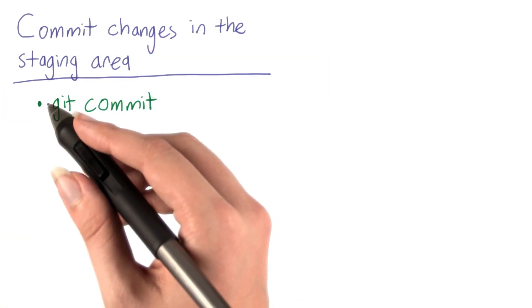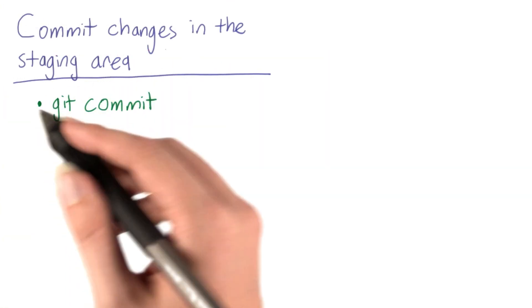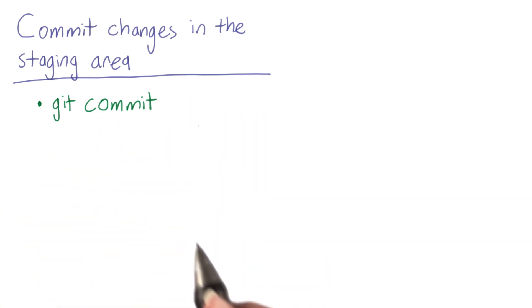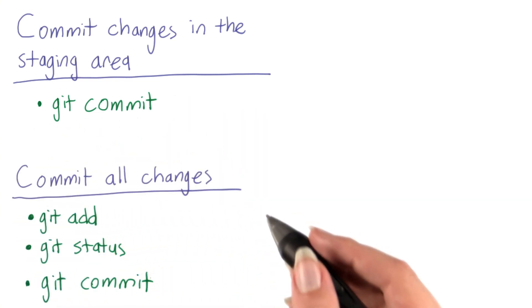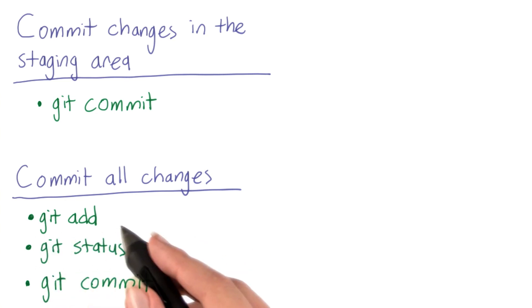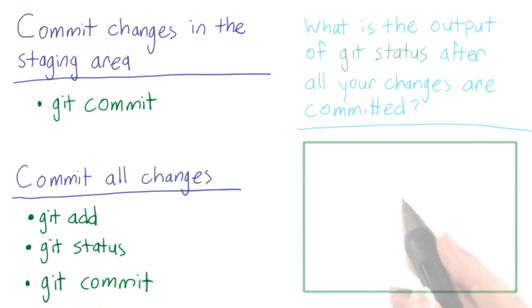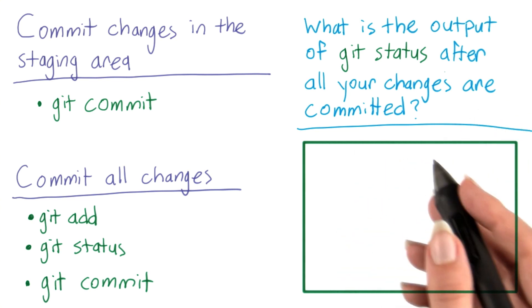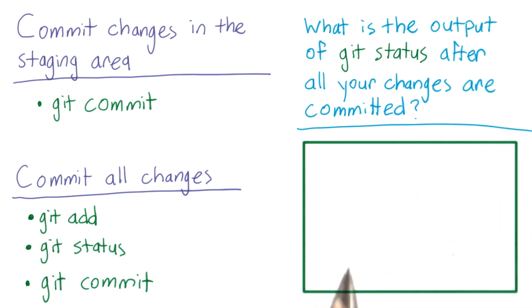Now go ahead and commit the changes in your reflections directory that you previously added to the staging area. You can do this using the command git commit. Then continue committing until you have committed all your changes using git add, git status, and git commit. What is the output of git status after all your changes are committed? Paste the output here.